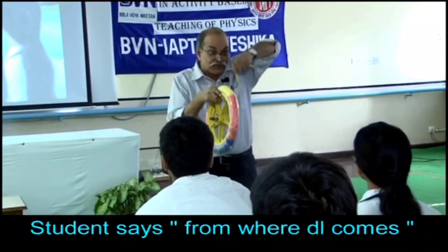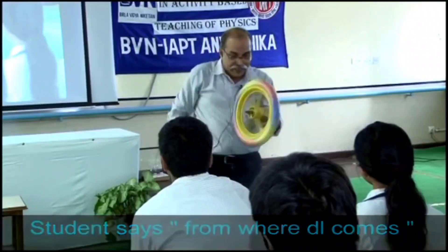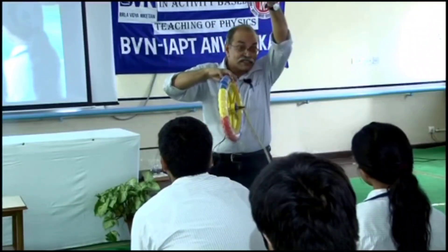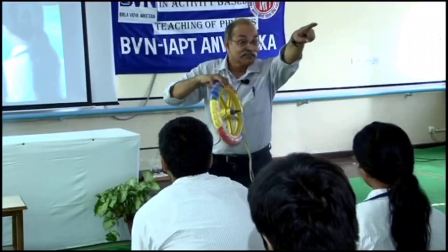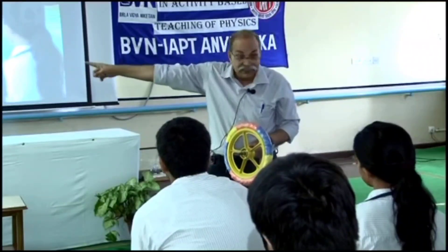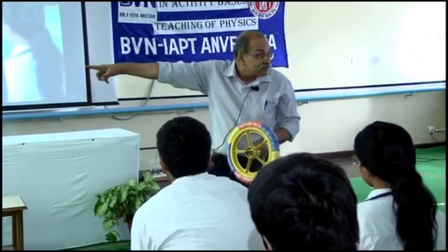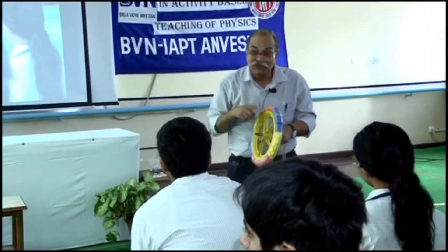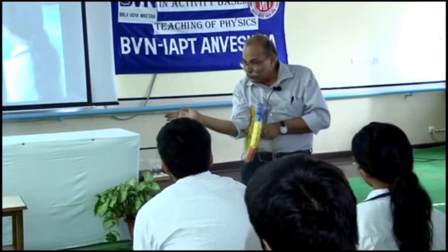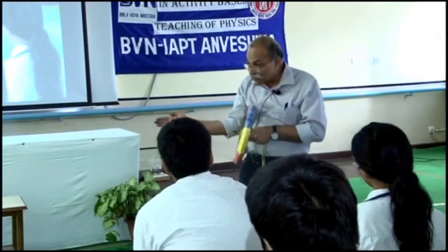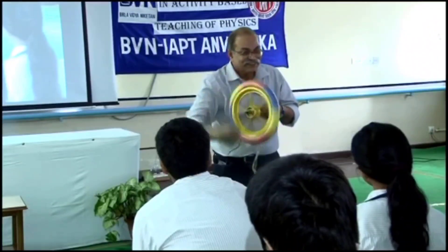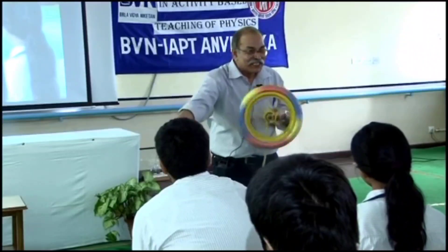The torque of this force — when I hang it, this force is there, this R vector is there, this force is there. So R cross F is there and that R cross F has a direction towards you. If you have a torque you must have DL. DL must be equal to torque into DT and they should be in the same direction. Since the torque is in this direction, DL is in this direction. Initial L was here — you add this DL and you get a new L which is slightly rotated. So it keeps moving in this fashion.